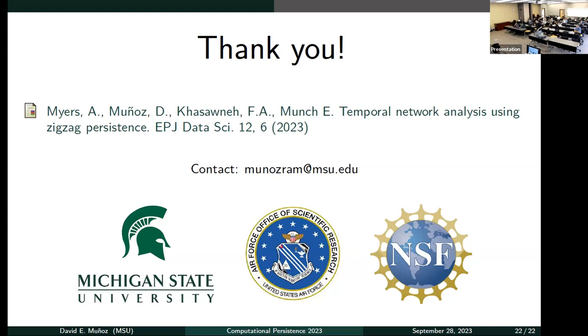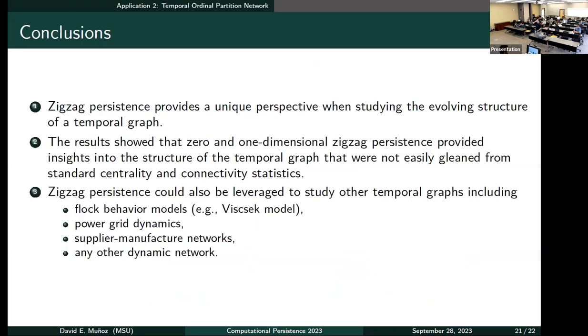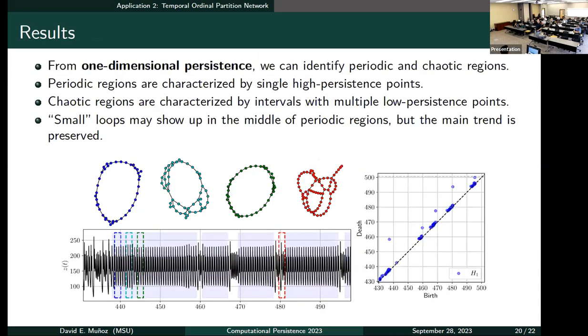Questions? Actually, I have a question. Can you go back to the previous slide? So does how long a cycle persists in your module or in your filtration depend on the size of the cycle? Is it relevant? Is it true that larger cycles tend to persist longer or is it not really relevant? I don't think so. I think it's the general structure of the graph, but yeah, it wouldn't be the size, but how it maintains its structure through time.